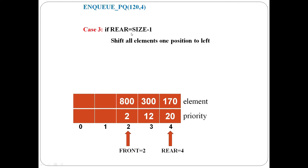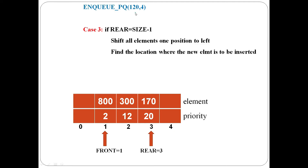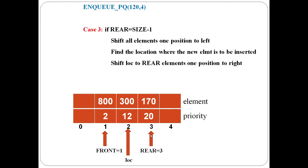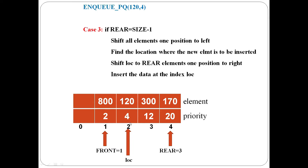Case three: rear is equal to size minus one, meaning there is no space at the rear end but there is space at the front end. All elements are shifted one position to the left. The new element — item 120 with priority 4 — is inserted between the elements at positions 2 and 12. The location is identified, elements from that location to rear are shifted one position to the right, and item 120 with priority 4 is inserted. Now elements are in descending priority order.